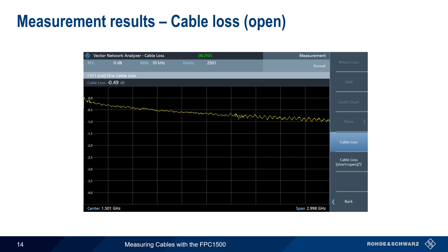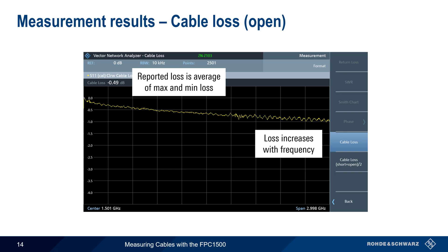Here's an example of measuring cable loss using only an open termination. We can easily see that loss increases with increasing frequency, which is typical for cable measurements. An average numerical value of cable loss over this frequency range, here 0.49 dB, is also automatically calculated and displayed.